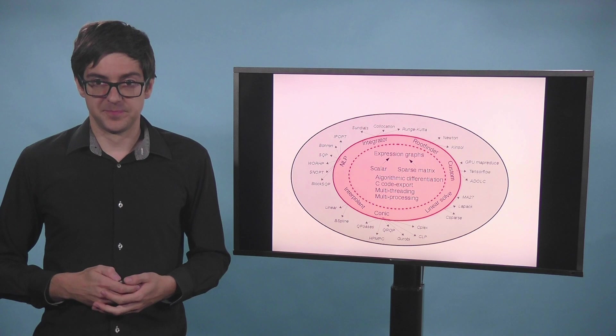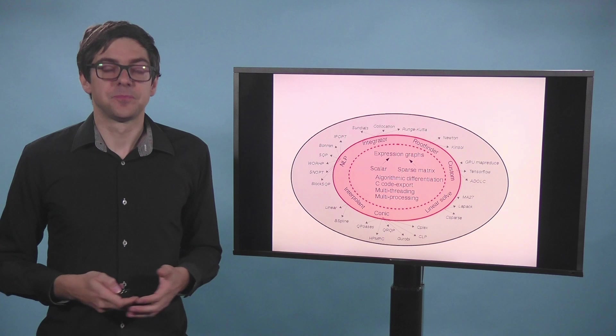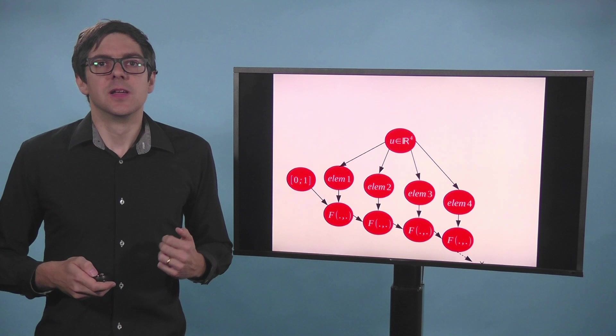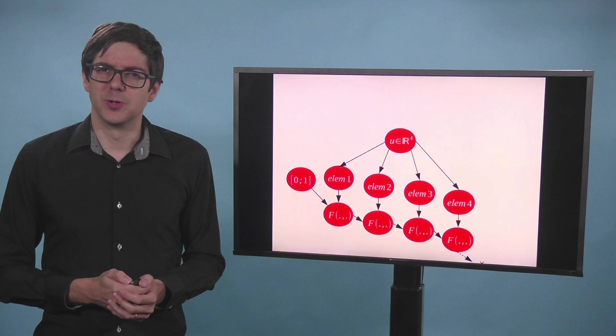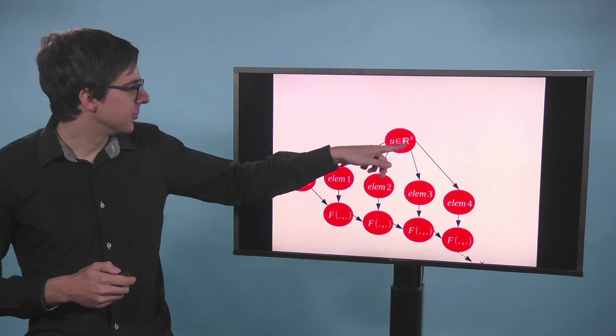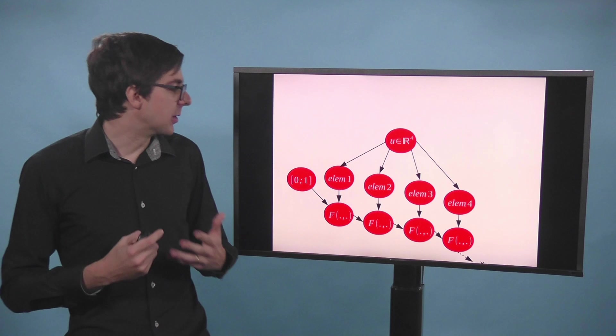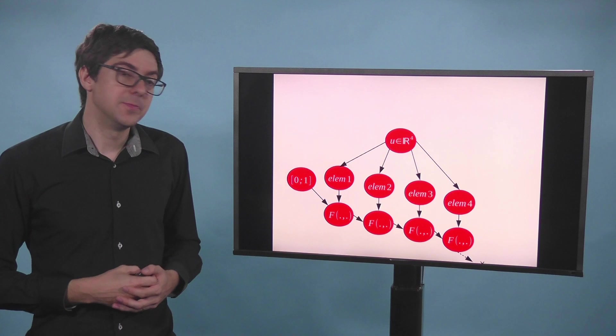So you express your algorithm as mathematical operations. And you can differentiate them all the way. So here, let's go to a single shooting optimal control problem. Very simple. So we start out with decision variables. We have a vector U of length 4, which is like the control input to steer a dynamical system. So F represents the time discretization of a dynamical system with two states. We have an initial state, 0, 1.